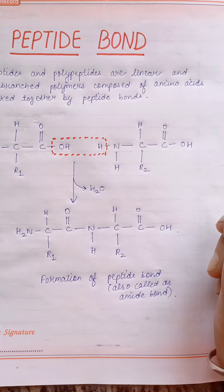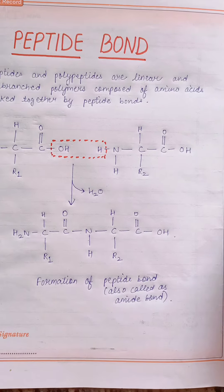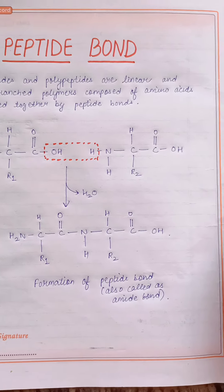A peptide is a compound consisting of two or more amino acids. And what is a polypeptide?